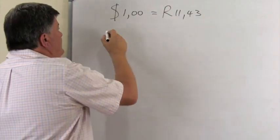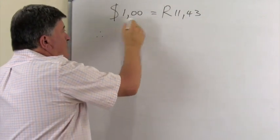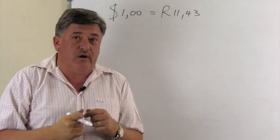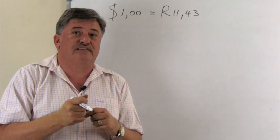Now what you need to do is $1 remember equals R11.43. We want to know what is $1,400.